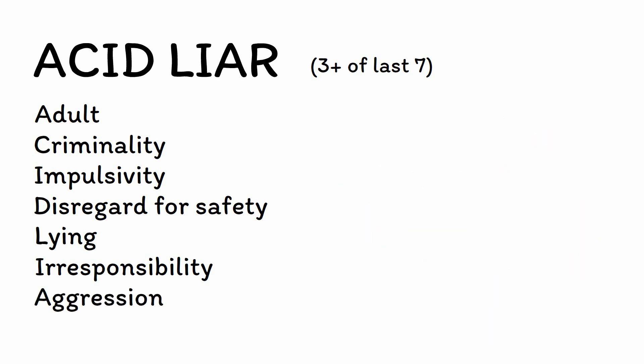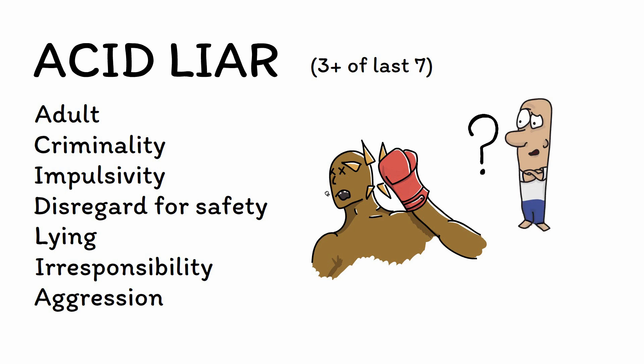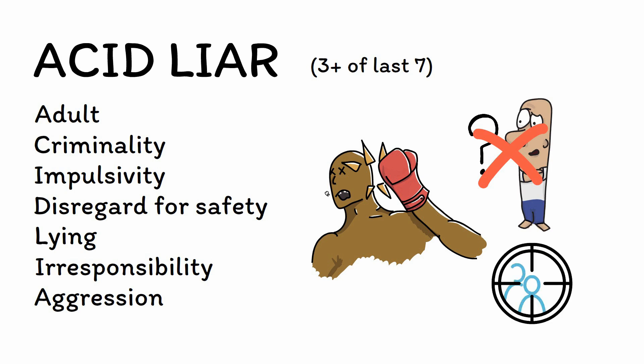A is for aggression. Physical aggression and even violence can be a manifestation of ASPD. Notably, this is not the kind of purposeless agitation seen in other conditions like delirium or substance intoxication. Instead, people with ASPD tend to attack others in a purposeful or targeted way, such as hitting another person in the face if they feel insulted by them.